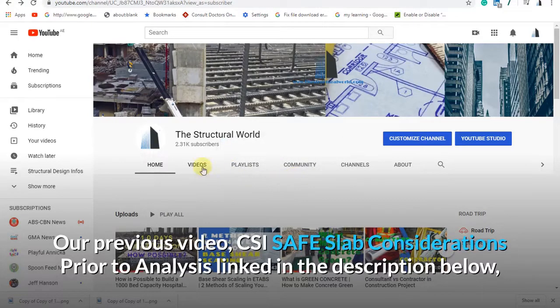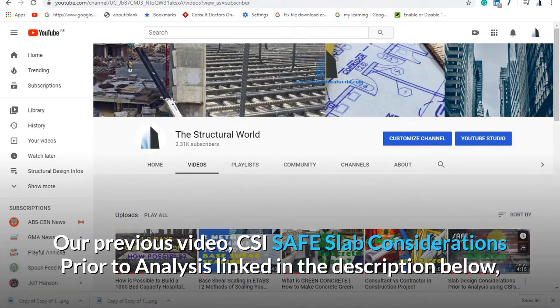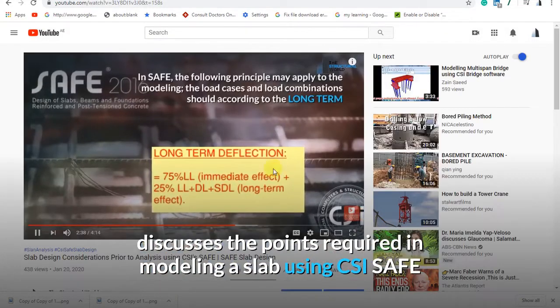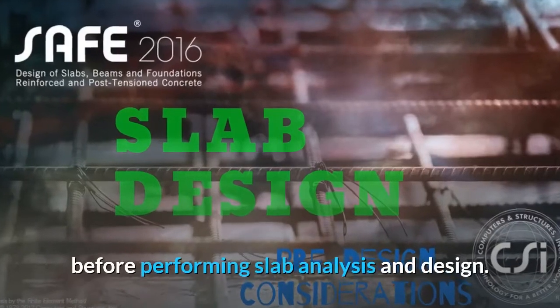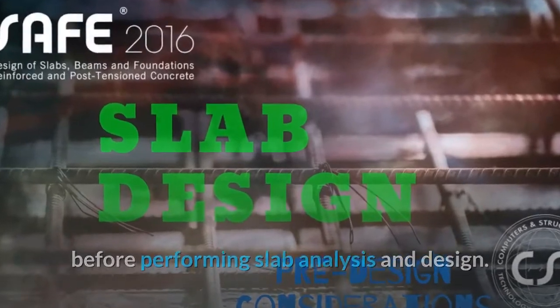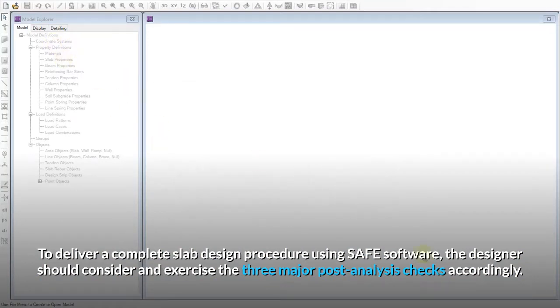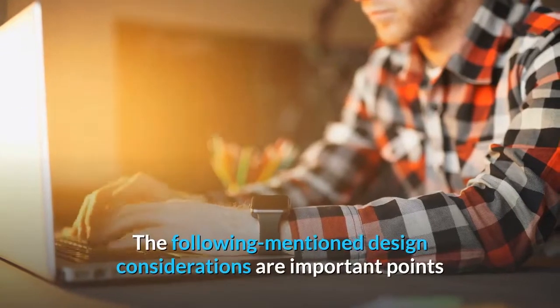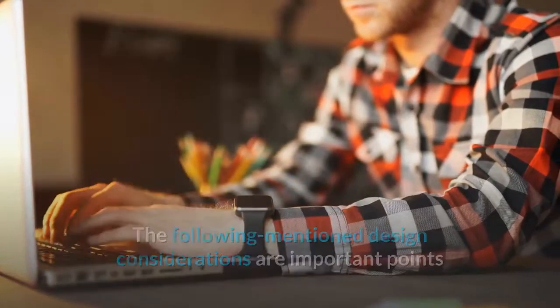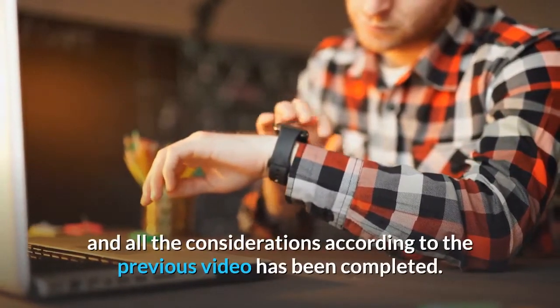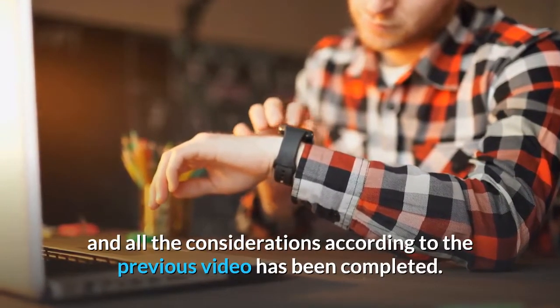Our previous video, CSI-SAFE Slab Considerations prior to analysis linked in the description below, discusses the points required in modeling a slab using CSI-SAFE before performing slab analysis and design. To deliver a complete slab design procedure using SAFE software, the designer should consider and exercise the three major post-analysis checks accordingly. The following design considerations are important points that have to be checked by the designer once the slab model has been analyzed.